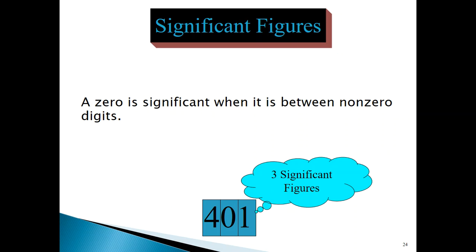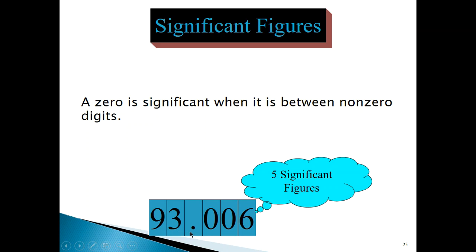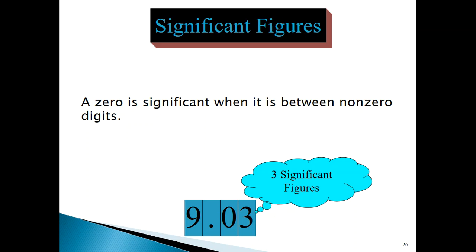The second rule says a zero is significant when it is sandwiched between non-zero digits. For example, in 401, the zero is sandwiched between the four and the one, so there are three significant digits. Here's another example where more than one zero is sandwiched between two non-zero digits — two zeros between a three and a six — so those zeros are significant and the total number of significant digits is five. Even if there is a decimal point in the number, it doesn't change anything; the number of significant figures remains the same.